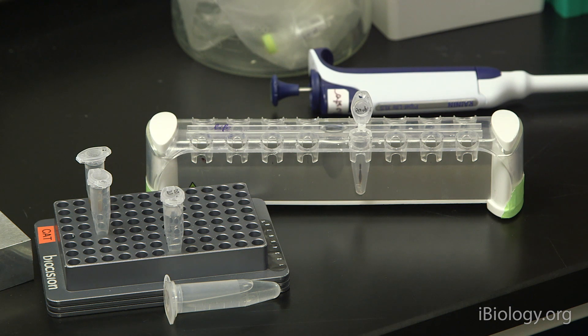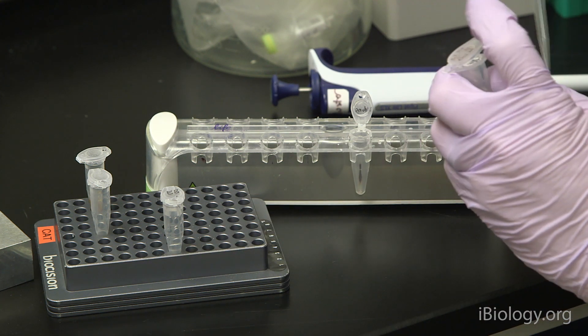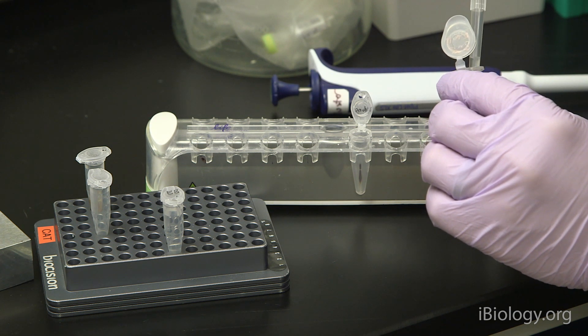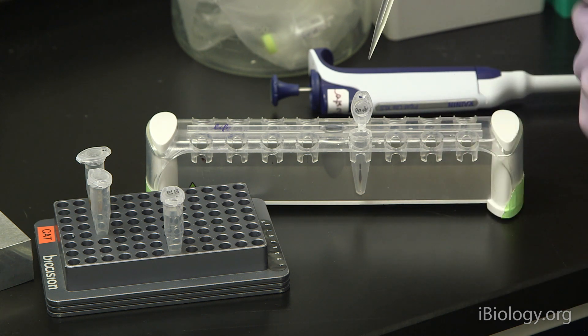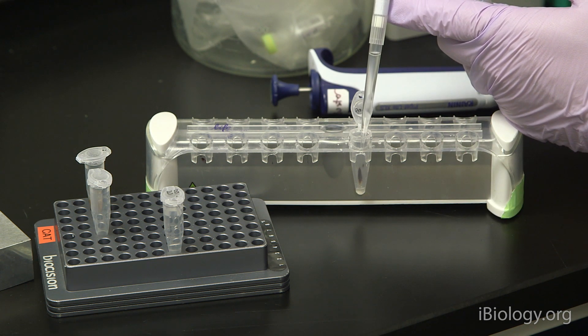You can discard the supernatant and perform the first wash with 80% ethanol. Some protocols may call for a different percentage of ethanol, so just consult your protocol. When you add the ethanol wash, you want to be careful not to disturb the pellet, so you're not resuspending the beads or mixing them into the solution.